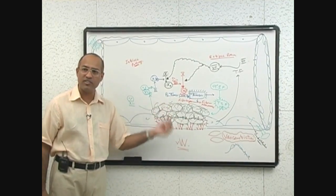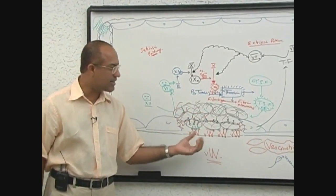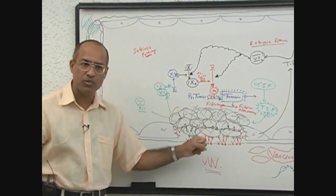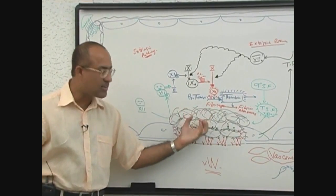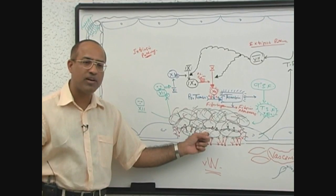Adherent platelets undergo release reaction from which granules? Alpha and delta granules. Granule products bring more platelets there and bring more vasoconstriction. When more platelets come and stick to the previously adherent platelets, this is called platelet aggregation.